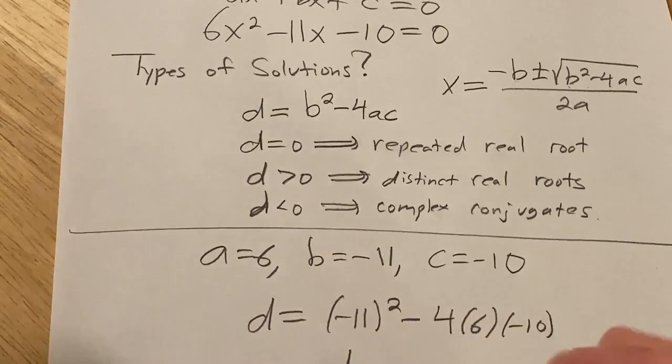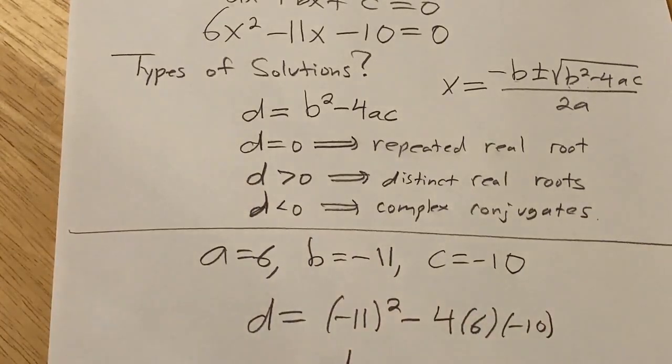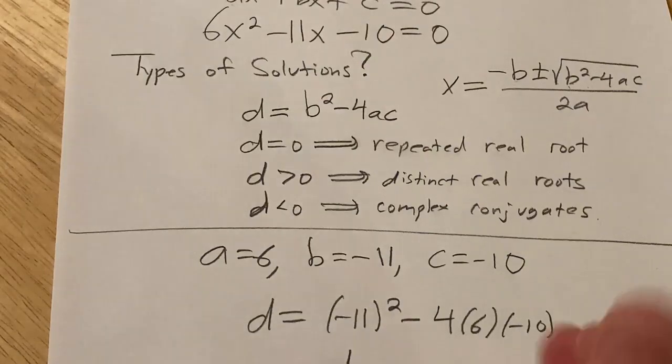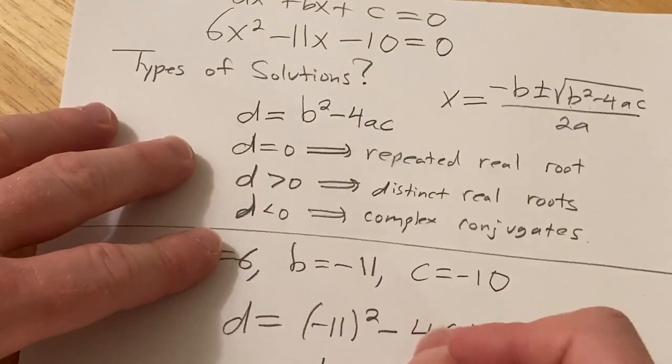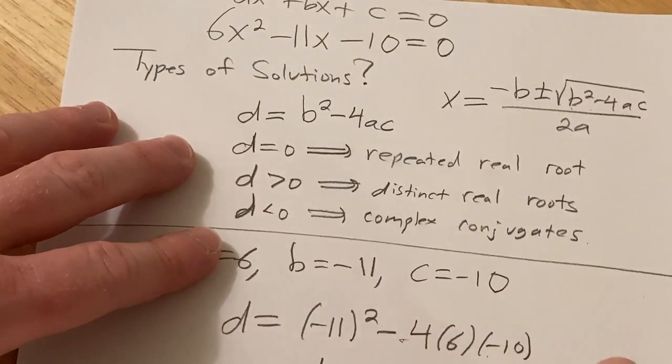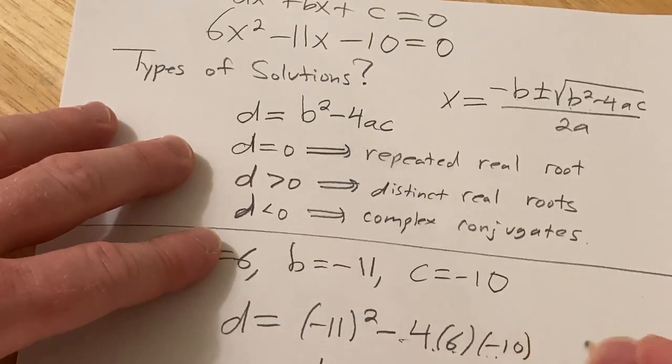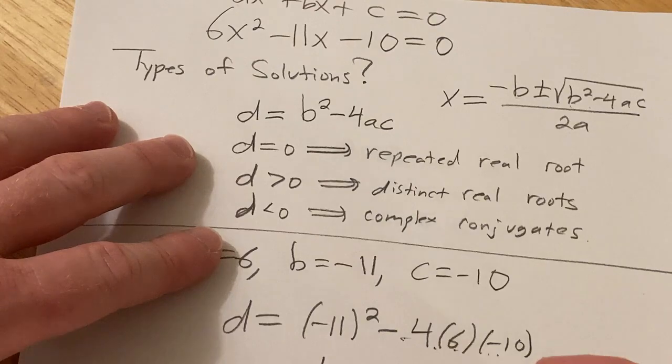So d is going to be, so I'm going to put this in my calculator. I guess I could do it without a calculator actually. This is 121, and then this is plus 24 times 10, that's 240.